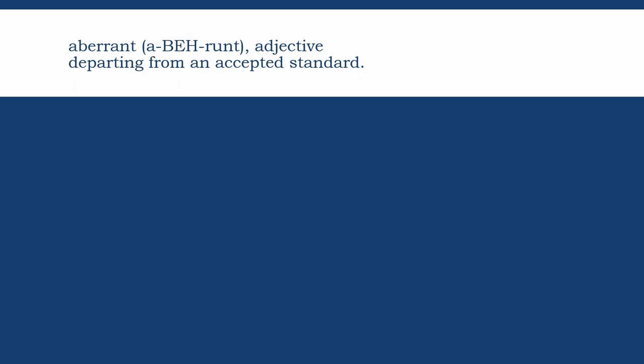Aberrant. The stress is on the second syllable: aberrant. Aberrant means a deviation from what is normal, what is desirable or expected. It is a deviation from what is customary and what is the natural course of action. Something that is aberrant is strange.